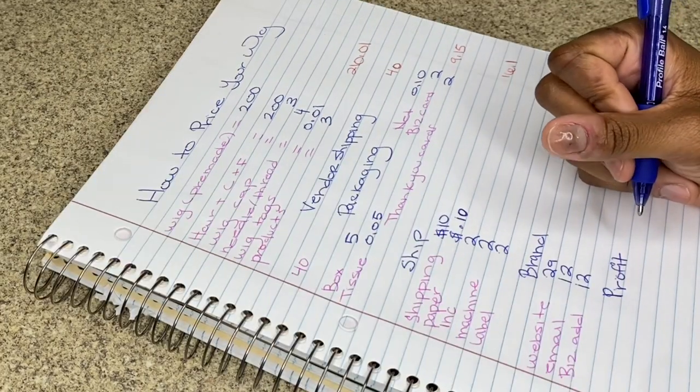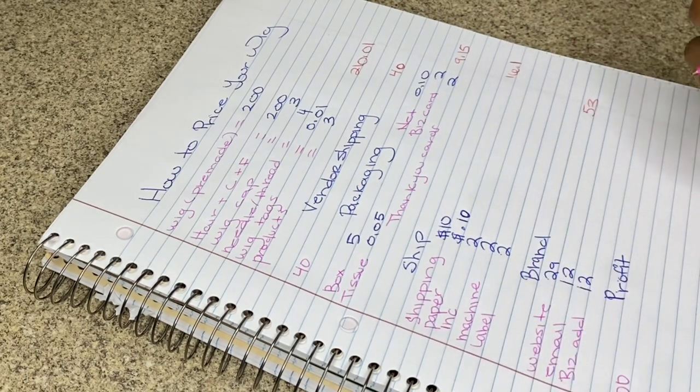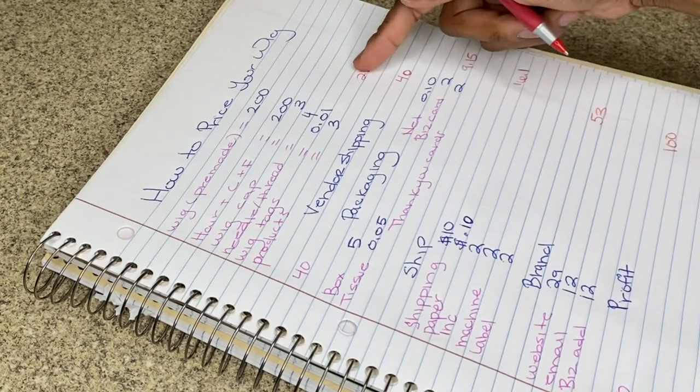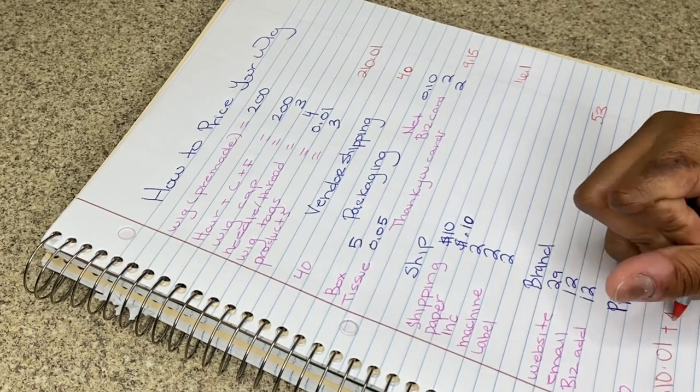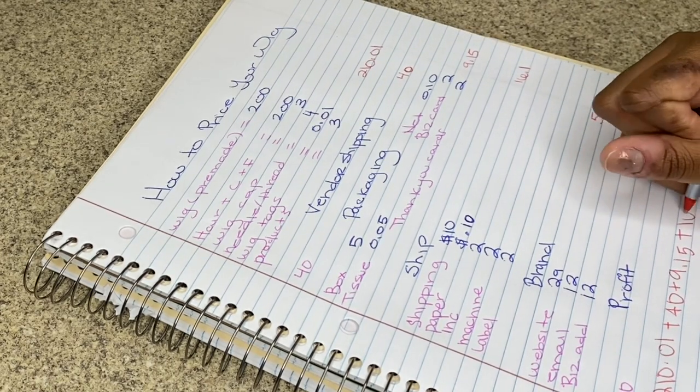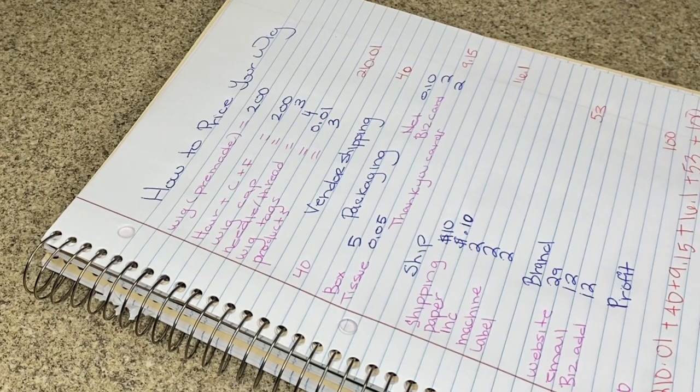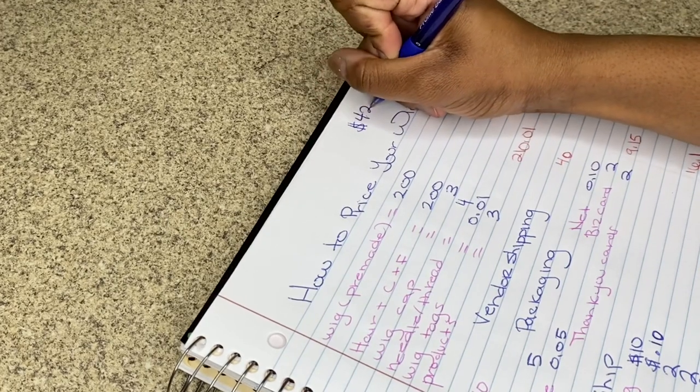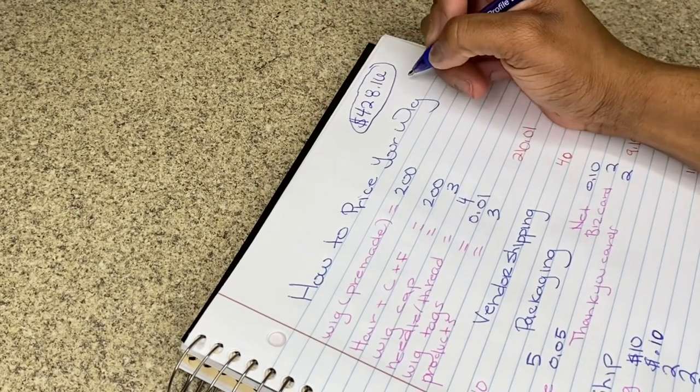Now you want to add in your profit. Let's just say you want a hundred dollars for profit. You want to go ahead and add all of this together, so you have the $210.01 plus $40. Just keep in mind when you are doing your pricing, this pricing is just for a specific length - the longer your length, the more your price will increase. So the total that we got for this is $428.16, and you want to go ahead and round up, so we can do $430.